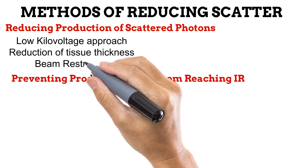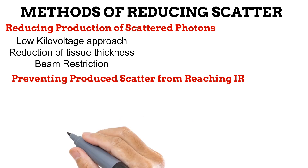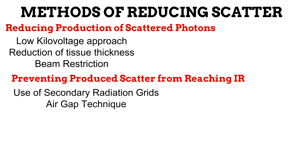In the first group, we have the use of a low kilovoltage, reducing the thickness of the anatomical part, and restriction on the beam size. In the second group, we have the use of grids and the air gap technique. In this video, we'll be covering the set of approaches that seek to reduce the amount of scattered X-ray photons that are produced. And in the next video, we wrap up control of scattered radiation by looking at approaches that would prevent scatter from reaching the image receptor.